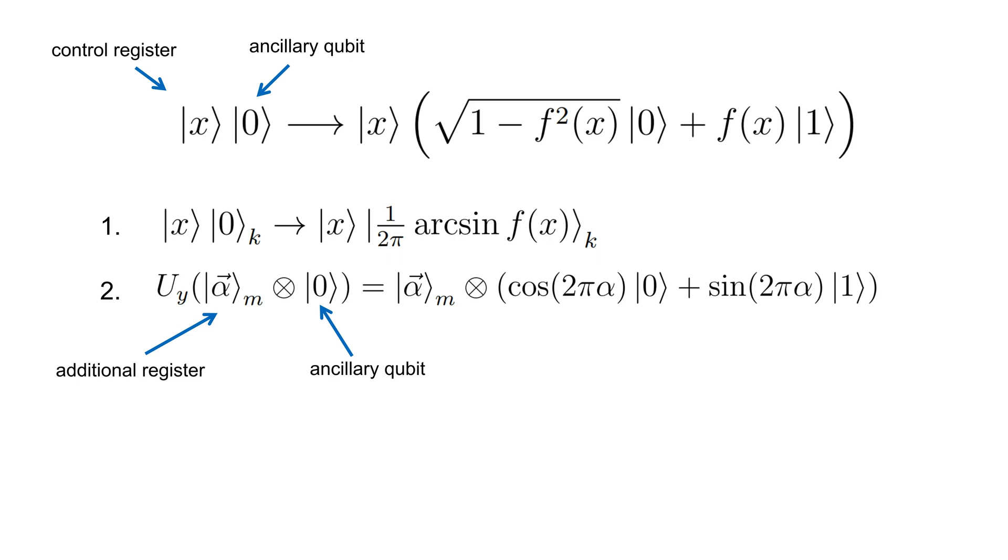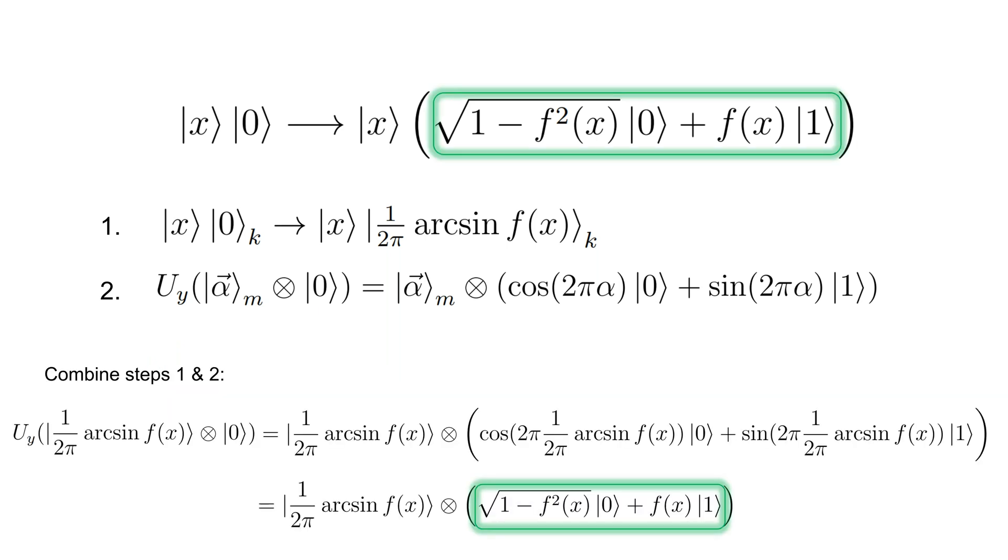Second, one should encode the value of the additional register into the ancillary qubit using controlled rotations. If we now apply the second operation to the register which holds the arc sine, we will perform the desired mapping into an ancillary qubit.